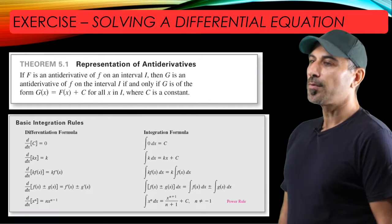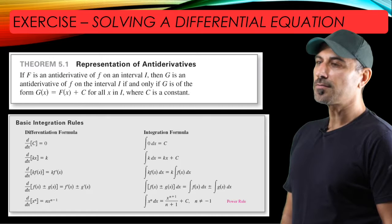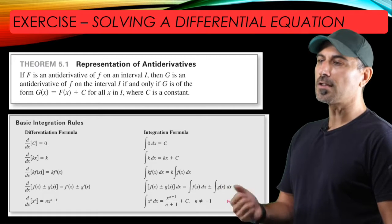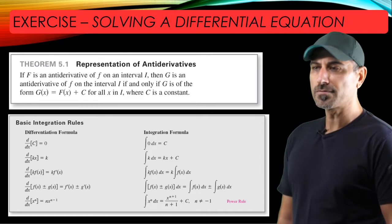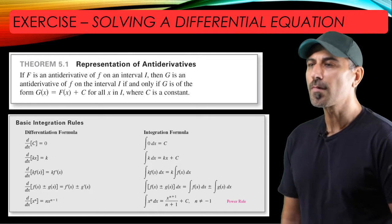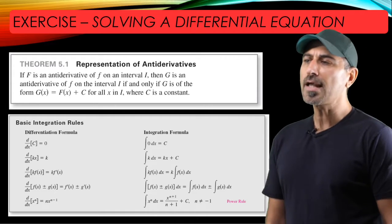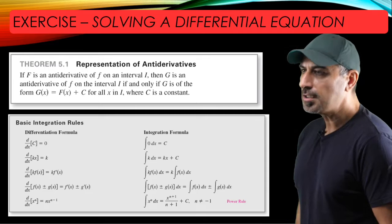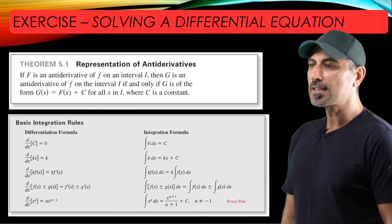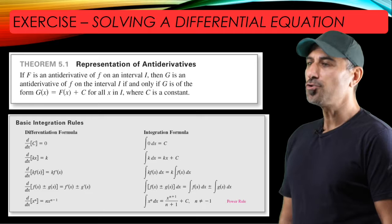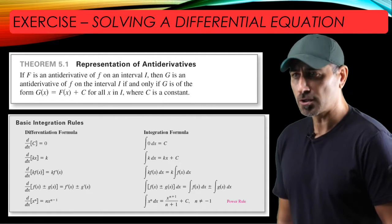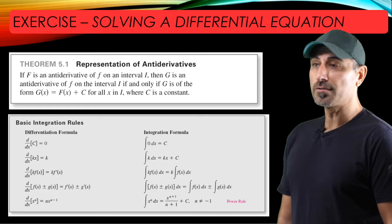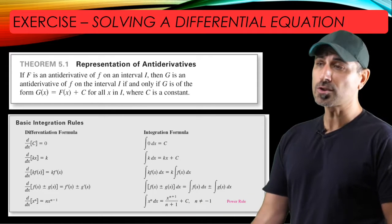Here is the representation of antiderivatives. Say you have a function little f defined on an interval and you find the antiderivative — let's call it capital F. If you have another antiderivative capital G, then F and G differ only by an arbitrary constant C. In fact you may have infinitely many choices of antiderivatives of a function, and whenever you take the derivative of the antiderivatives you get the function that you started with.